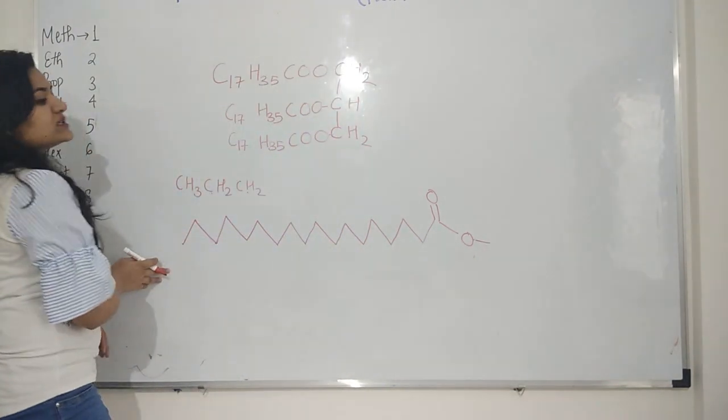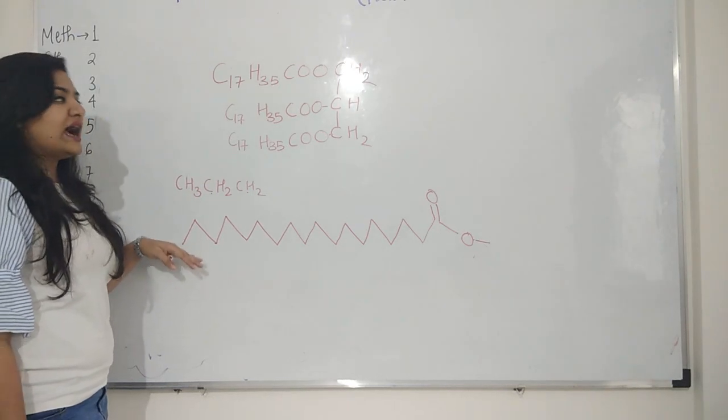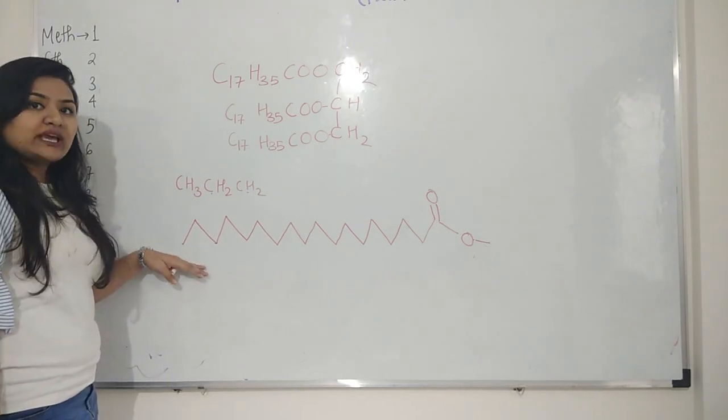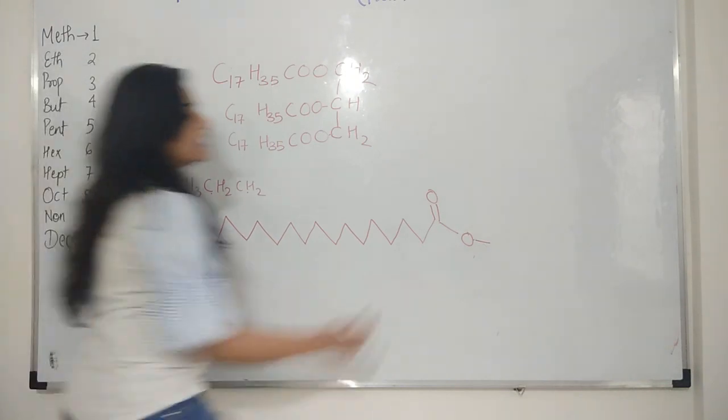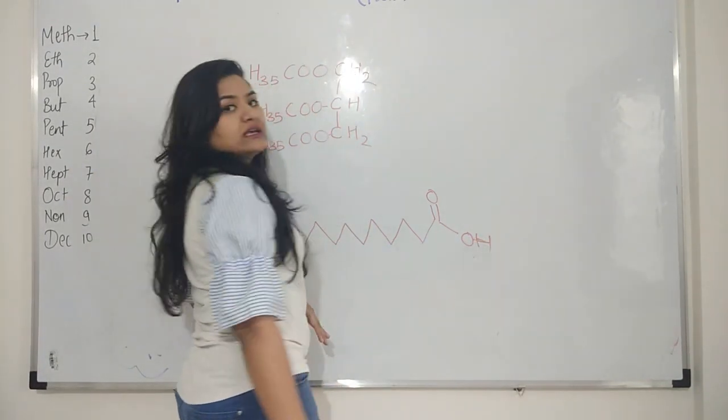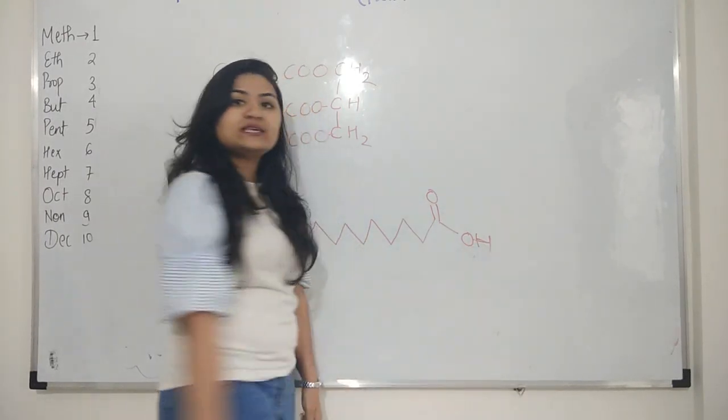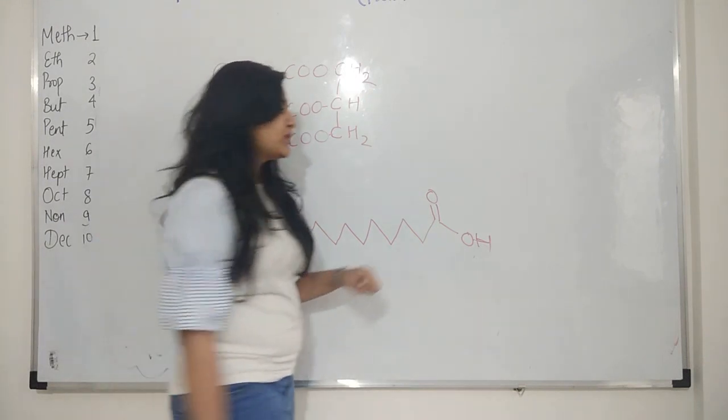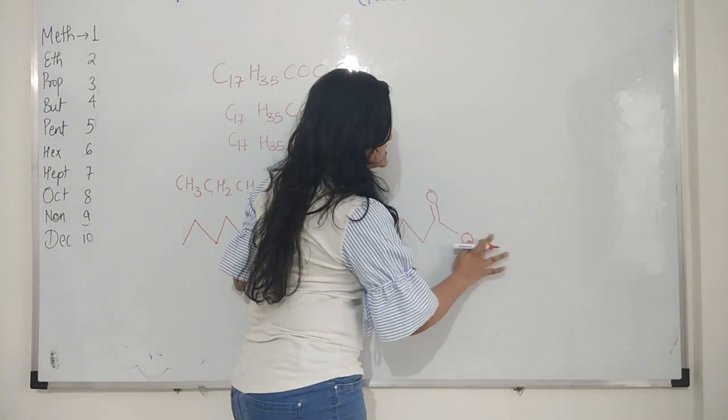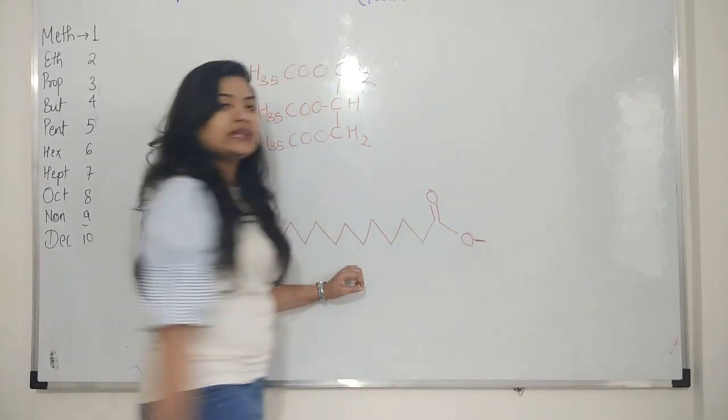This is what a structure of long chain carboxylic acid or long chain ester looks like. Right now it is ester. If I had an H over here, it would be carboxylic acid because then it would have COOH, which is the carboxylic acid symbol. But here we have CH3, that is the reason it is an ester.